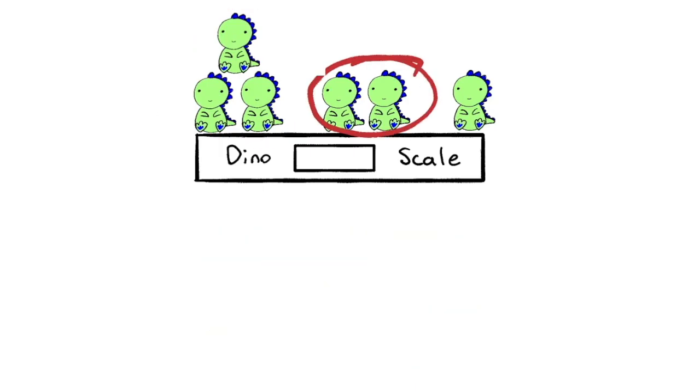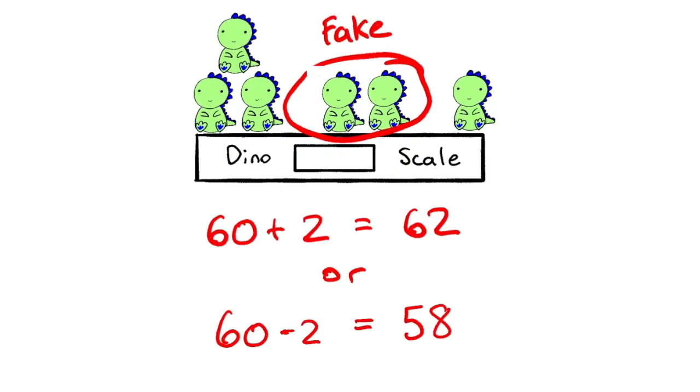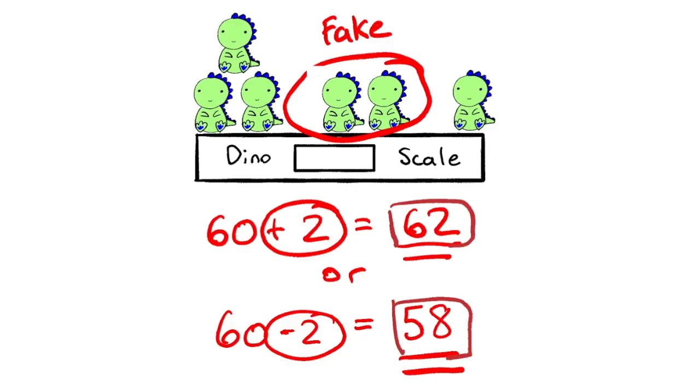Now let's look at these two. If these two dinosaurs are from the fake family, the scale will either read 62 or 58 because there's two of them that either weigh one kilogram more or there's two of them that weigh one kilogram less. So if we see a 62 or a 58, we know these dinosaurs must be the fake ones.